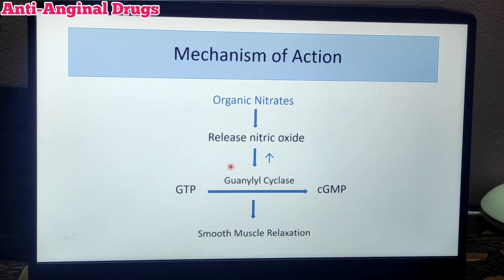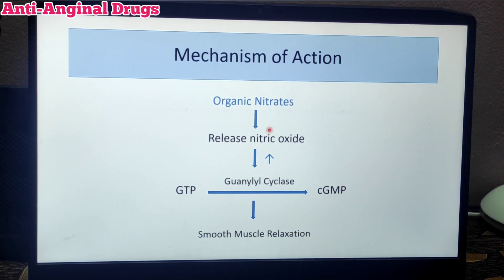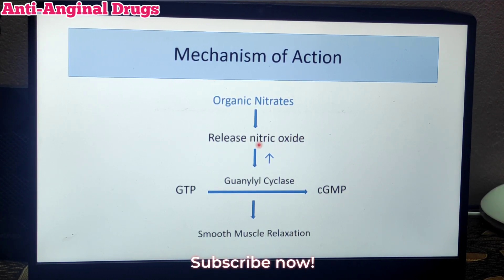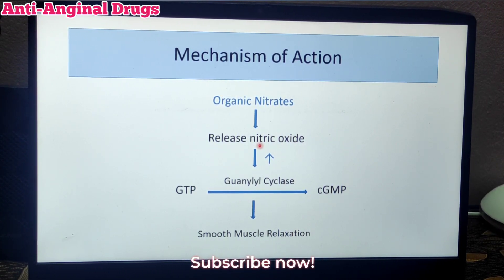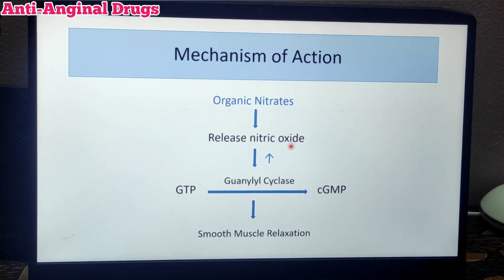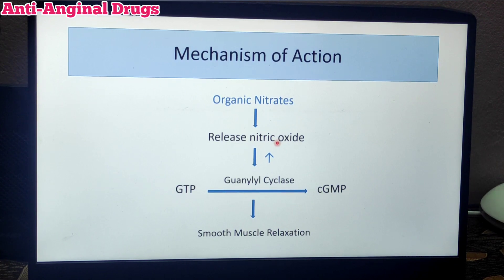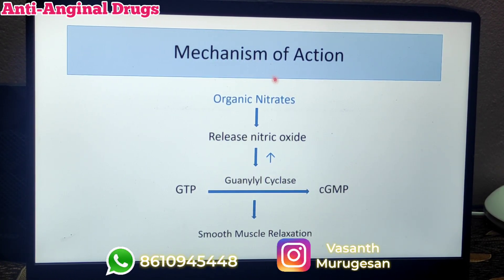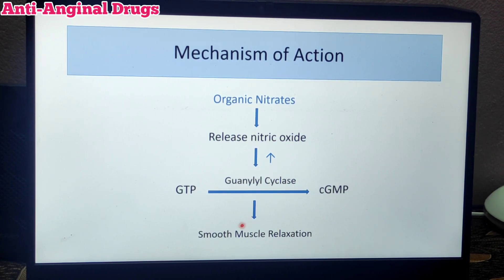Now, the mechanism of action: how do organic nitrates work? There is a substance naturally found in our body called nitric oxide. Nitric oxide is a natural vasodilator — it relaxes smooth muscle in blood vessels. Organic nitrates are converted to nitric oxide in the body, which causes smooth muscle relaxation and vasodilation.